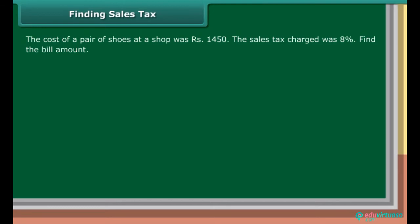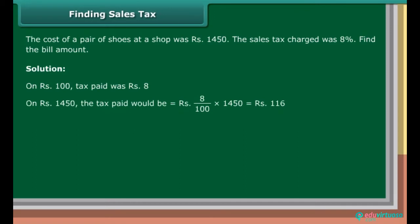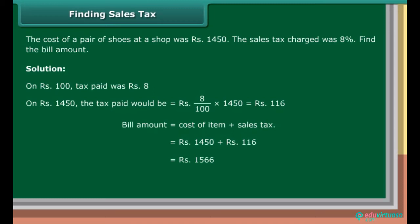Finding sales tax: The cost of a pair of shoes at a shop was Rs. 1,450. The sales tax charged was 8%. Find the bill amount. Solution: On Rs. 100, tax paid was Rs. 8. On Rs. 1,450, the tax paid would be Rs. 8 upon 100 into Rs. 1,450, which is equal to Rs. 116. Bill amount is equal to cost of item plus sales tax, which is equal to Rs. 1,566.